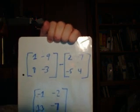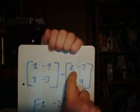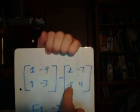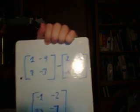But if you remember, then that 2 becomes a negative 2. That 7, negative 7 becomes a 7. That negative 5 becomes a 5, and the 4 becomes a negative 4.